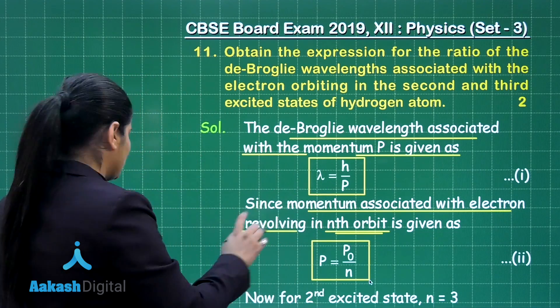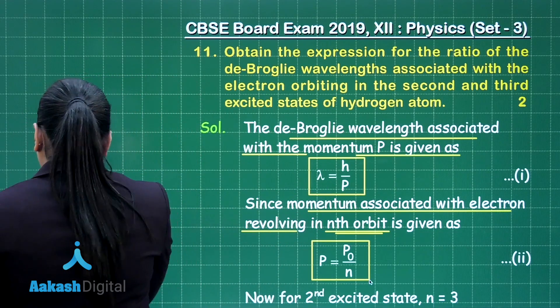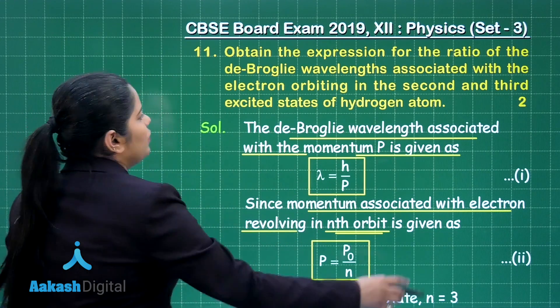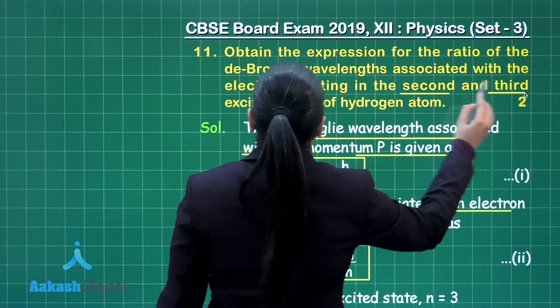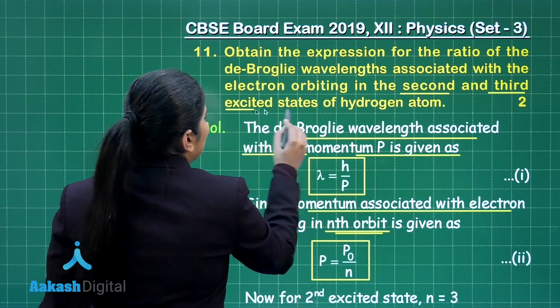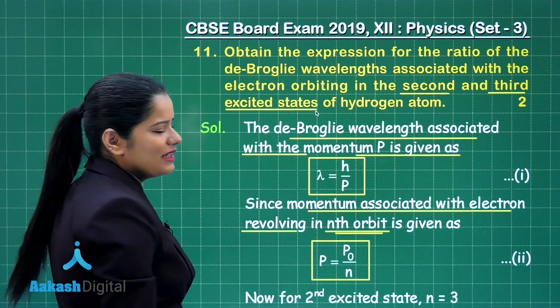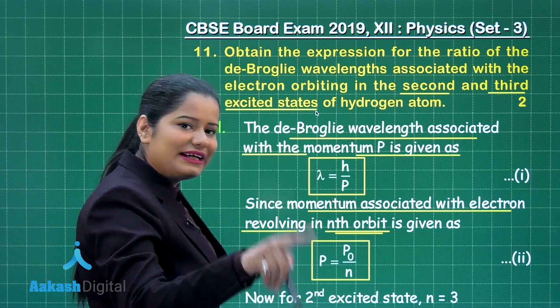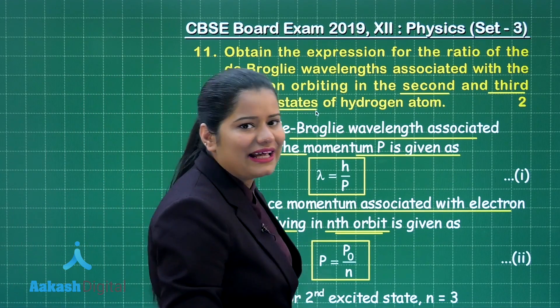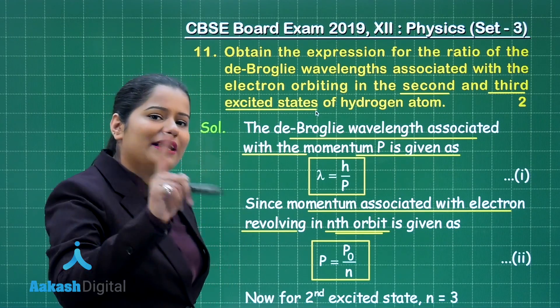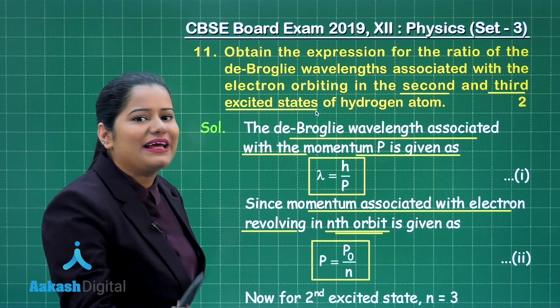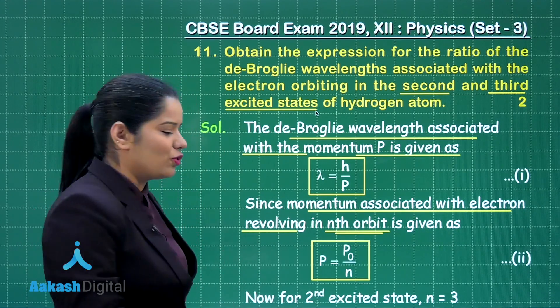In this question, we need to talk about the second and third excited states. For the second excited state, n will be 3. For the third excited state, n will be 4.